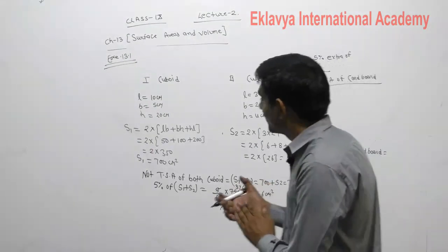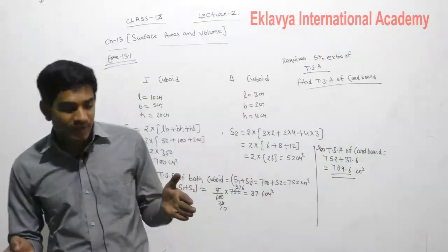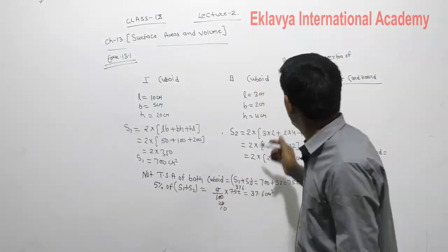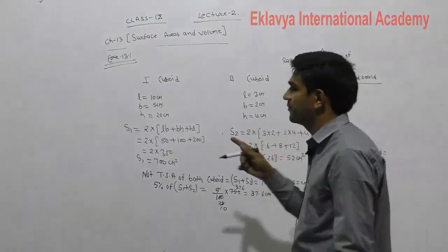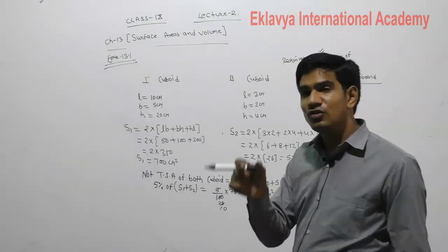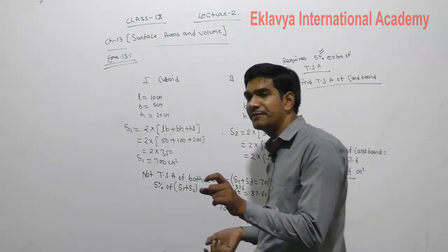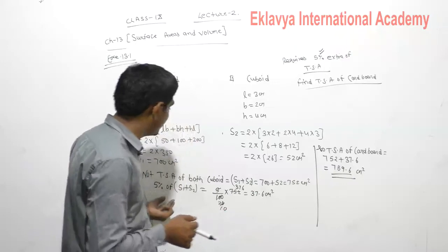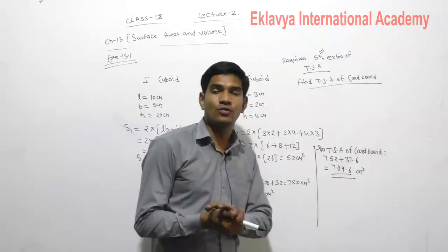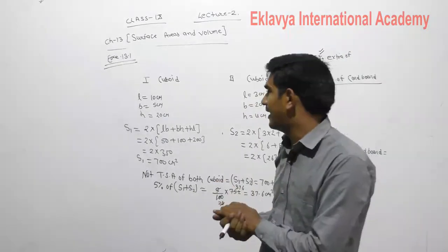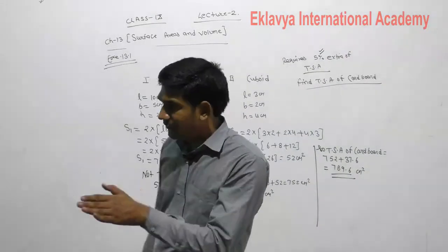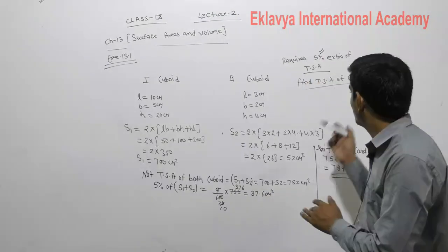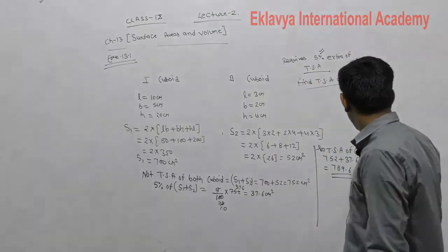To summarize: we took a cardboard and made two cuboids from it. While forming two cuboids there was a 5% extra requirement — 5% of the total surface area of both cuboids. So: first cuboid's TSA calculated, second cuboid's TSA calculated, both added together, then 5% of the total calculated and added again. That final value is the total surface area of the cardboard required.